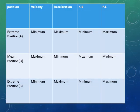Here is a summary table of velocity, acceleration, kinetic energy, and potential energy. The first column shows extreme position A, mean position O, and extreme position B. The subsequent columns show velocity, acceleration, kinetic energy, and potential energy at each position, as discussed in the previous slides.